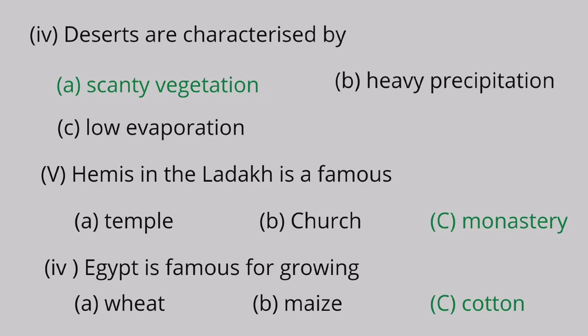Question 5: Hemis in Ladakh is a famous A. temple, B. church, C. monastery. The correct answer is monastery. Question 6: Egypt is famous for growing A. wheat, B. maize, C. cotton. The correct answer is cotton.